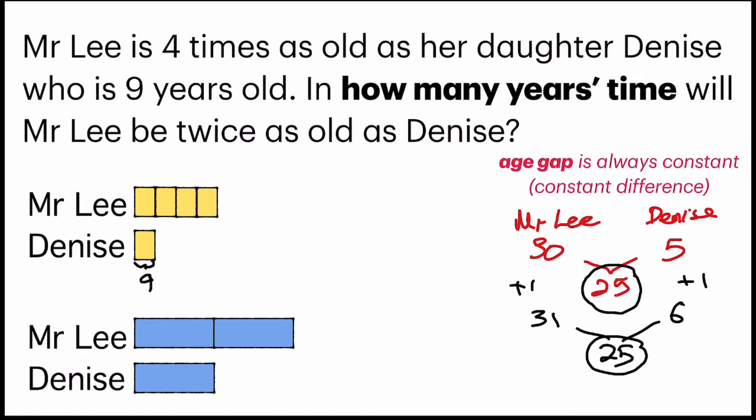So remember what we just mentioned, the age gap difference is always constant. So let us highlight the difference here. Which means that these 3 units would be the same as this 1 chunk of blue unit. So let us find out what is the age gap.